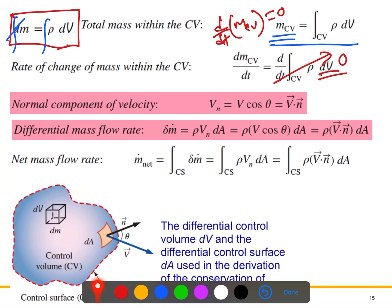Now consider the case where mass flow is happening — mass coming in or going out through the differential area dA. Here, n is the outward unit vector normal to dA, making a 90-degree angle with dA. V is the flow velocity relative to the coordinate system. The velocity makes an angle theta with this outward normal. The mass flow rate is always proportional to the normal velocity component.